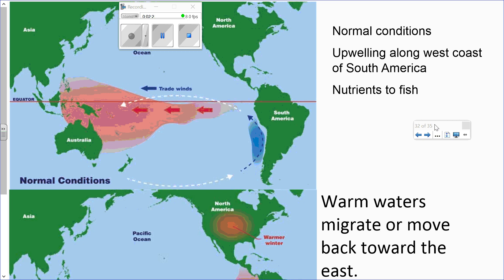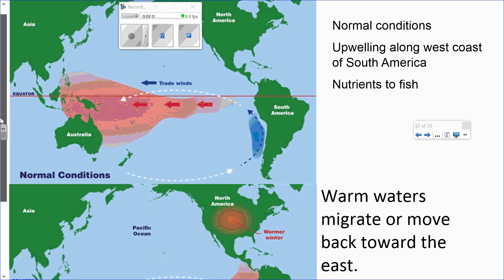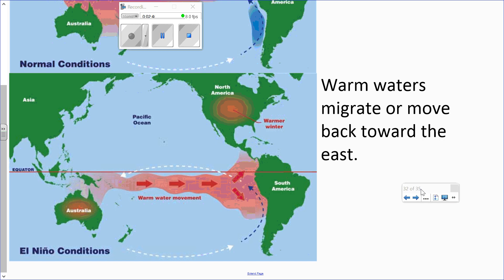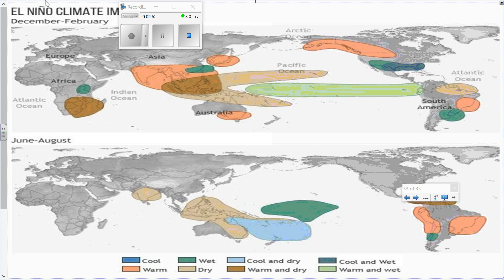Sometimes warm waters migrate back eastward — instead of moving west across the Pacific Ocean, they move east. This situation is called El Niño, sometimes also referred to as ENSO. El Niño typically begins to occur around December.